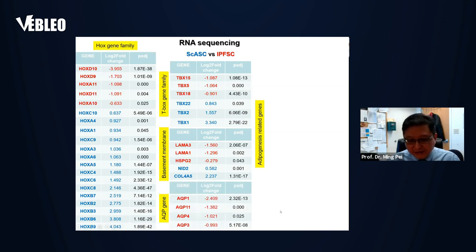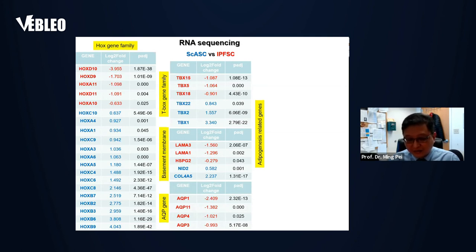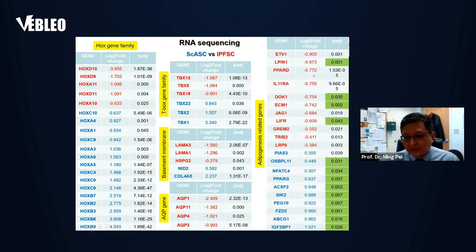The AQP gene family is unique: its function is to transport water into cells, and it's called the plumbing system for cells. These functions are very important for cartilage functionality. Very interestingly, AQP genes are exclusively expressed in IPFSC. Looking at adipogenesis-related genes, most are highly expressed in SCSC, favoring adipogenesis. Only some adipogenesis-related genes highly express in IPFSC.